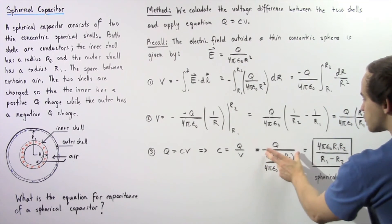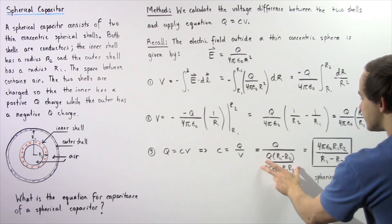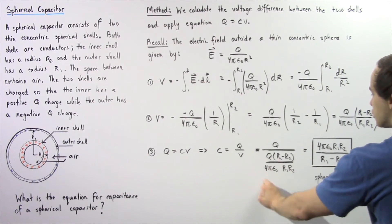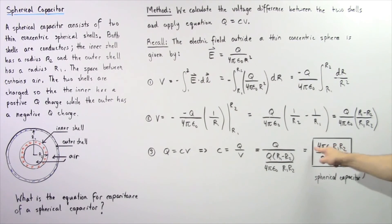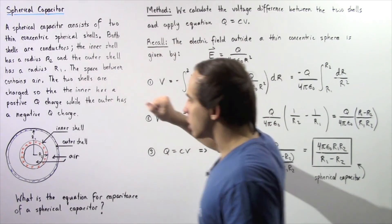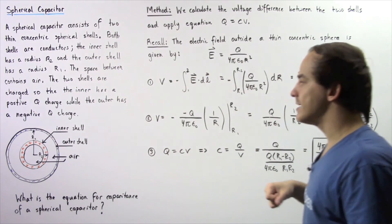We have 4π epsilon naught r1 r2 divided by r1 minus r2. This is the capacitance for a spherical capacitor in terms of the inner radius r2 and the outer radius r1.